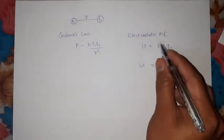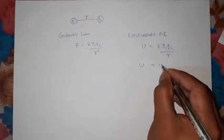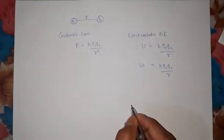This formula will be the same because the work done will be stored in potential energy. So this is why it's Q1Q2 divided by r. This is our formula: U = kQ1Q2/r.